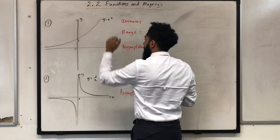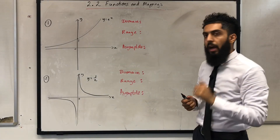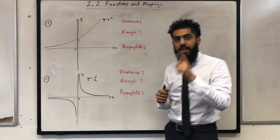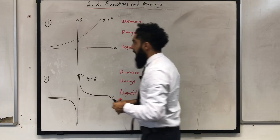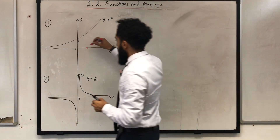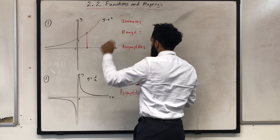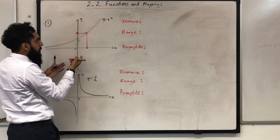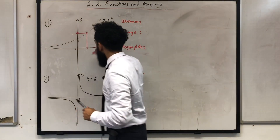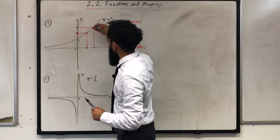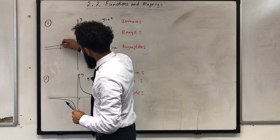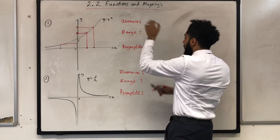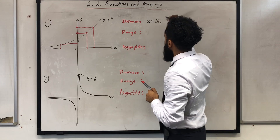Have a look at this sketch — the graph y = eˣ. I want to find the domain of this function. The first step is to look at the x-axis, pick any x value, and move vertically to intersect the graph. In general, x can be any real number. Therefore, for the domain, x ∈ ℝ.